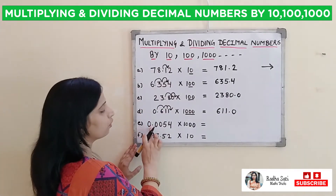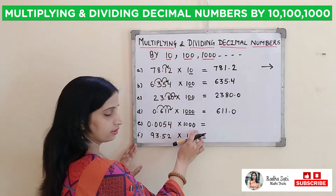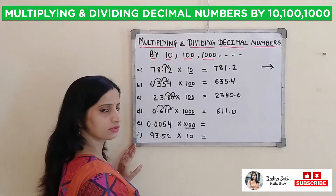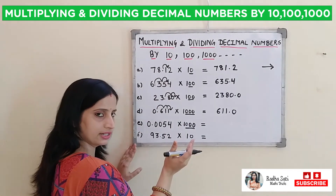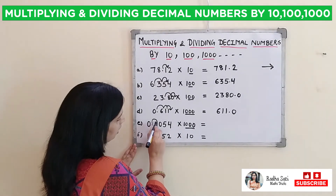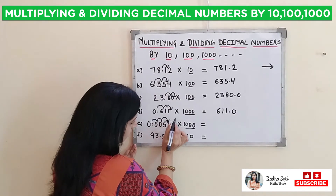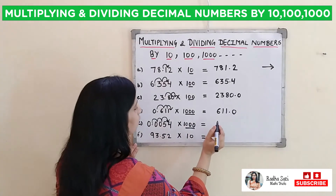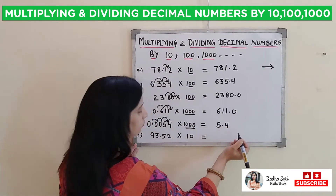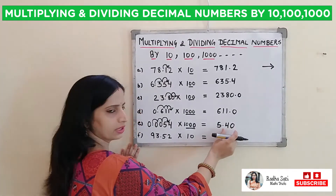Next one: 0.0054 multiplied by 1000. Again, in 1000 there are 3 zeros. So the decimal will shift to the right hand side by 3 places — 1, 2, and 3. This means the decimal will now come between 5 and 4. So the answer will be 5.4. Or we can put a zero also — it will not make any difference.